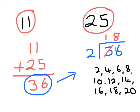Just to recap on what I did there: I took the sum of the two numbers and added them together. Eleven add twenty-five gave me a total of thirty-six — the green arrow is showing you that. I took the thirty-six and then halved it, and halving simply means dividing by two. So the middle number was eighteen.